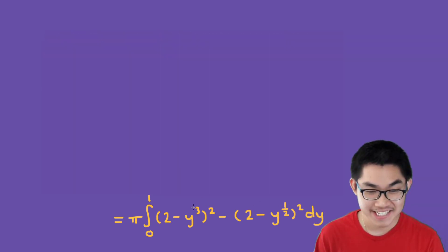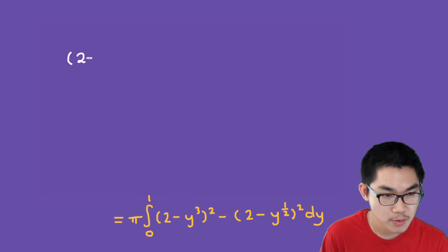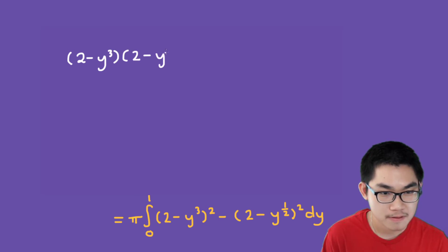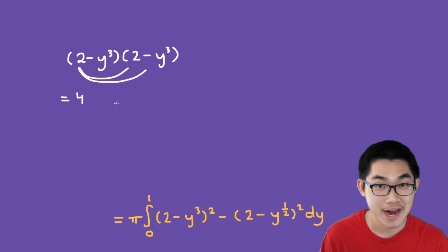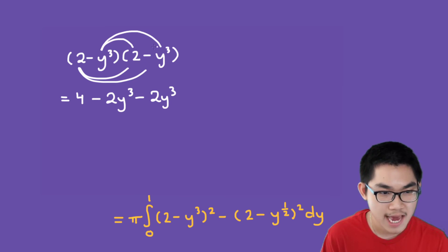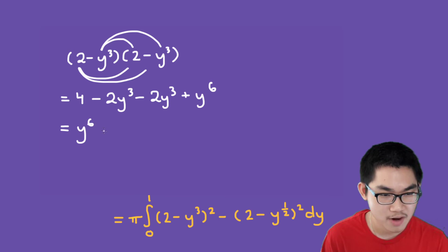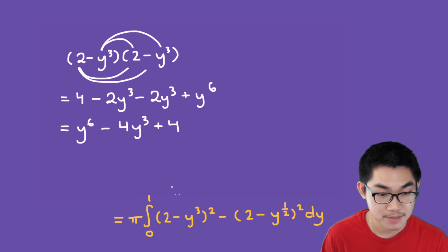Now the first thing we have to do is expand (2 minus y³)². That is (2 minus y³) times itself: 2 times 2 is 4, 2 times negative y³ is negative 2y³, and the same term again gives minus 2y³, and negative y³ times itself is positive y⁶. So this simplifies to y⁶ minus 4y³ plus 4.